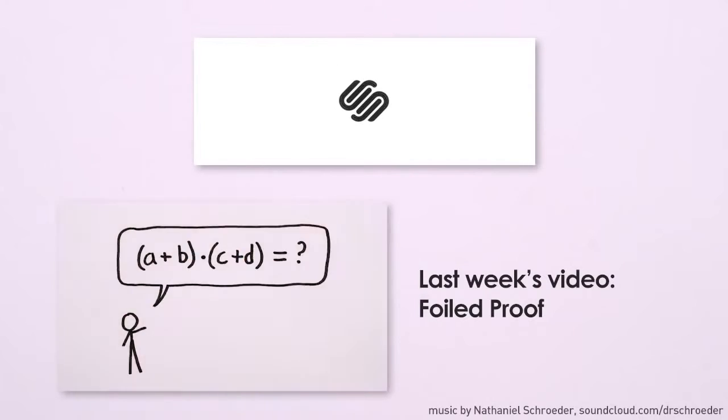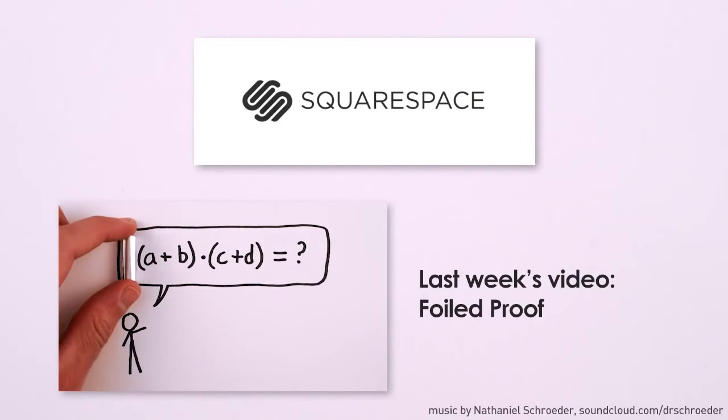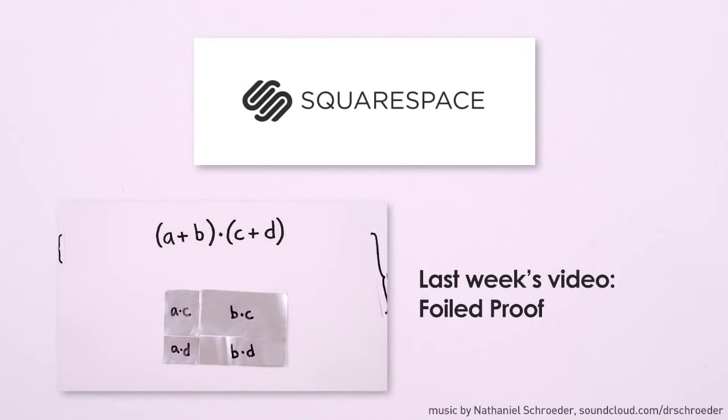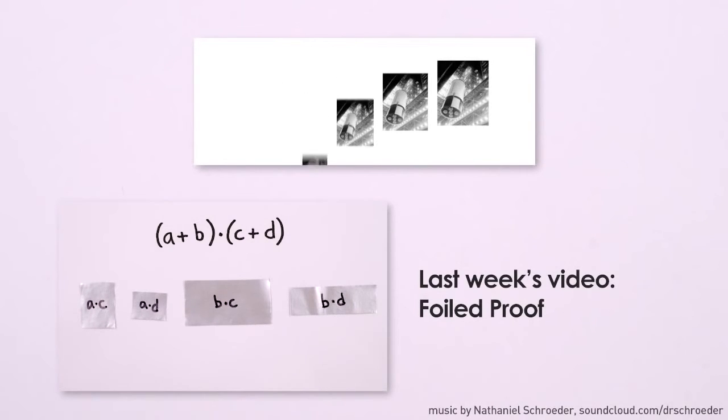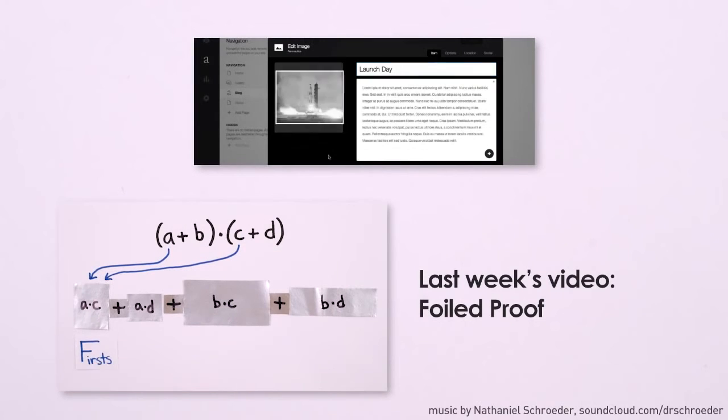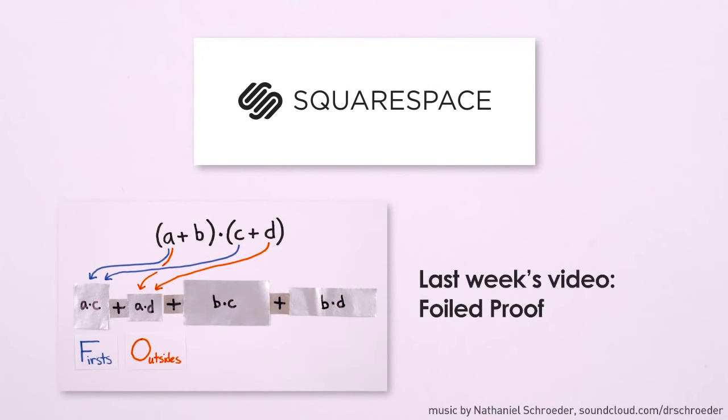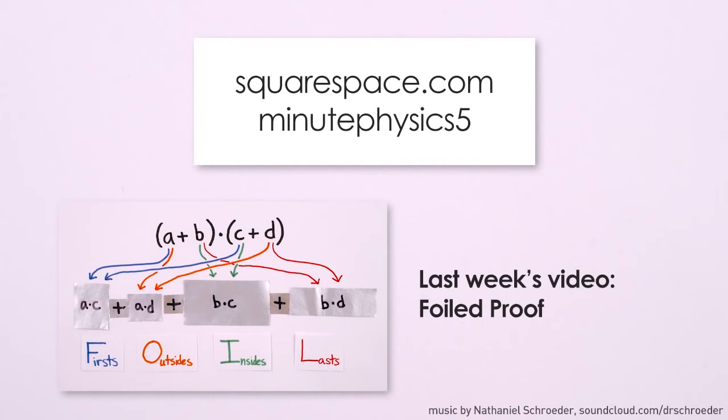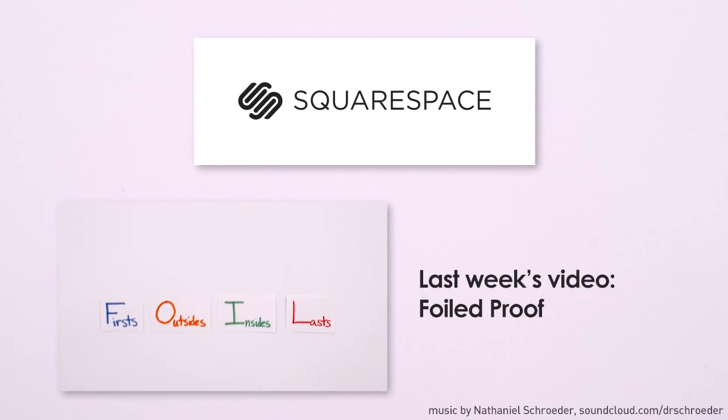This MinutePhysics video was brought to you by Squarespace, the all-in-one platform that makes it fast and easy to create a professional website, blog, portfolio, or online store. Basically, they let robots do the robot work of building and managing your website, and leave the exciting and creative parts to you. For a free trial and 10% off your first purchase on new accounts, go to Squarespace.com and use offer code MINUTEPHYSICS5. Again, thanks to Squarespace for supporting this episode of MinutePhysics.